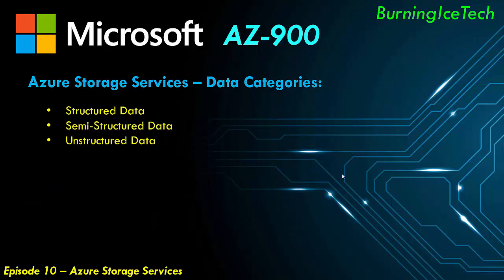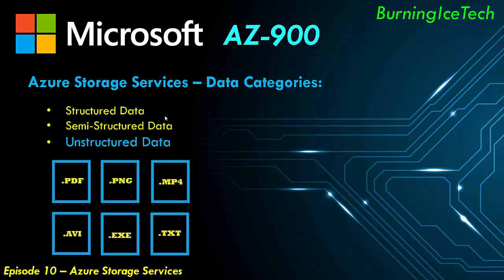Lastly, we have unstructured data. This can be data like PDF files, PNG files, MP4s, AVI, EXE, TXT, and many more. These are files that do not follow any structure, which represents pretty much any kind of data if you think about it. This brings us to our next topic: Azure Blob Storage.